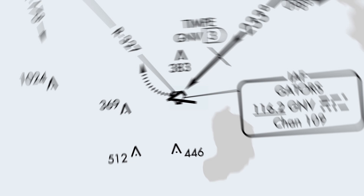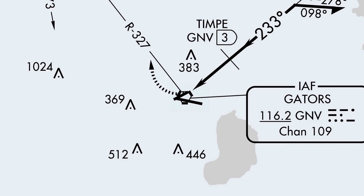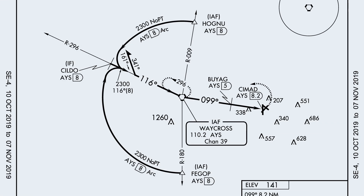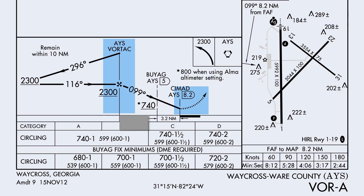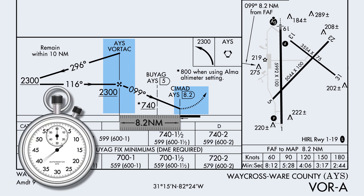Terminal approaches are those where the VOR is located on the field, meaning that the VOR serves as both the initial approach fix and the missed approach point. Non-terminal approaches are those where the VOR is somewhere off the field. In these cases, the VOR instead serves as the initial approach fix and the final approach fix.